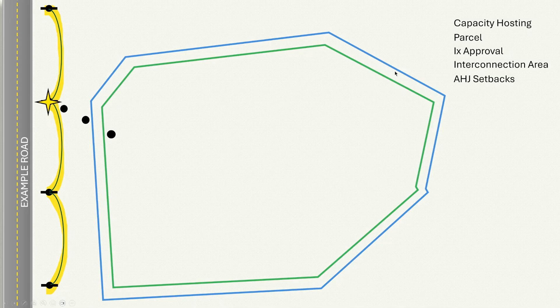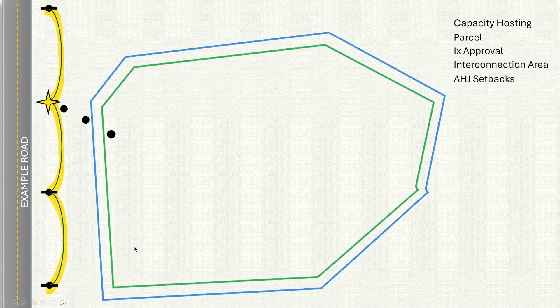In this graphic we're trying to identify exactly how much capacity we could put on the site based on a fixed parcel boundary. The first thing we want to do is look at the AHJ setbacks. This is typically found in the zoning ordinances, which might say you need a 50 foot setback from the parcel line, or maybe 100 foot, or maybe it's 500 feet from the road, which will vary from municipality to municipality.